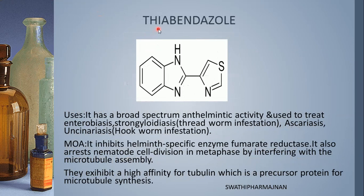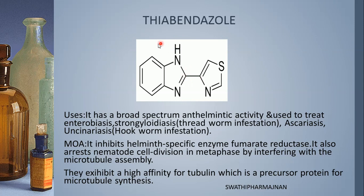The next structure is thiabendazole. 'Thia' indicates that thiazole is attached to benzimidazole — that is the structure of thiabendazole. Benzimidazole is attached directly with the thiazole. Thiazole is a 5-membered ring containing sulfur and nitrogen at first and third positions with two double bonds. At the fourth position it is directly linked with benzimidazole.